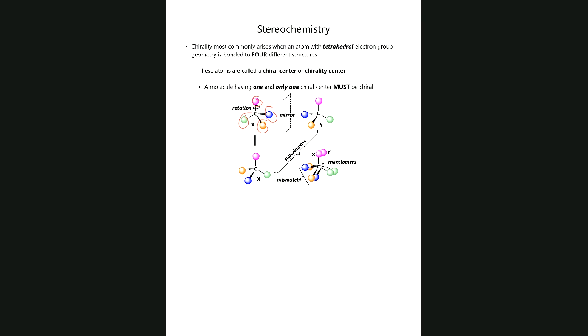If you try to pick up that mirror image and somehow try to rotate it such that the different groups on structure Y, which is the mirror image, you attempt to put it on top of structure X to see if things match, what you will observe is that no matter how you rotate it, you will always only get two of the pieces to match, but there's always going to be two that are going to be mismatched.